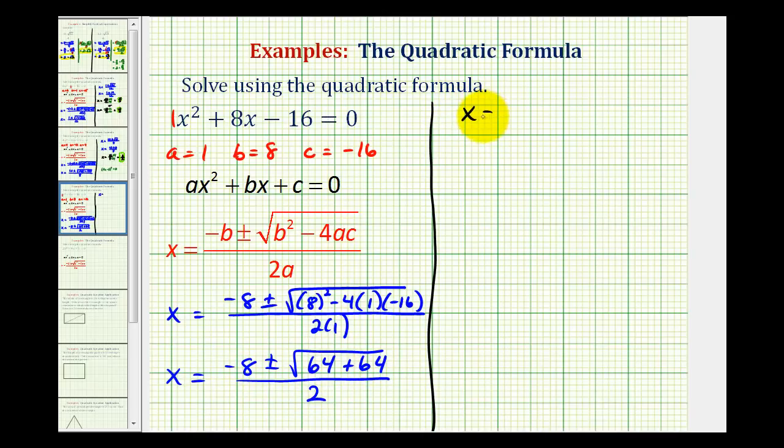So we have x equals negative 8 plus or minus the square root of 64 plus 64 equals 128, all over 2.